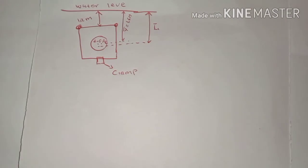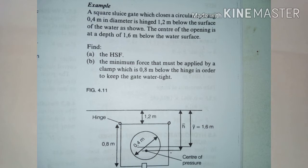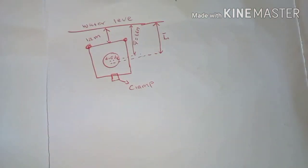We are going to do an example from the textbook, which reads as follows: A square sluice gate closes a circular opening 0.4 meters in diameter, hinged 1.2 meters below the surface of the water. The center of the opening is at a depth of 1.6 meters below the water surface. Part A: find the hydrostatic force. Part B: find the minimum force that must be applied by the clamp, which is 0.8 meters below the hinge, in order to keep the gate watertight.